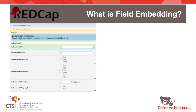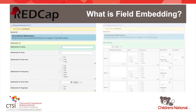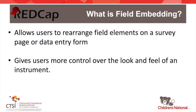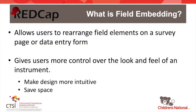While fields normally appear vertically on a form with each one appearing below the other, with field embedding you can reposition fields so that they appear side-by-side or in a grid format. This feature allows users to have more control over the design of their instruments and to arrange fields in a way that might be more intuitive to the participant or perhaps will save space on a form.